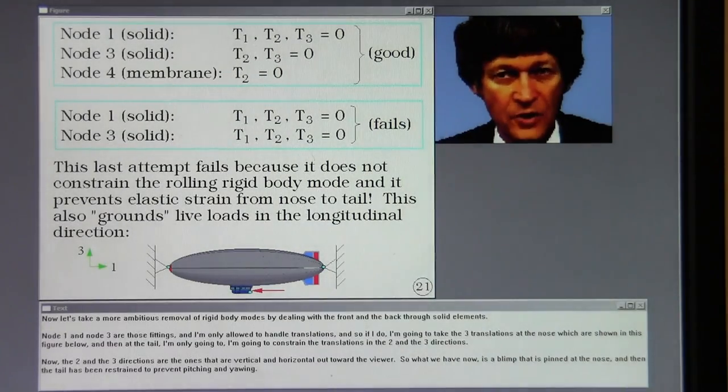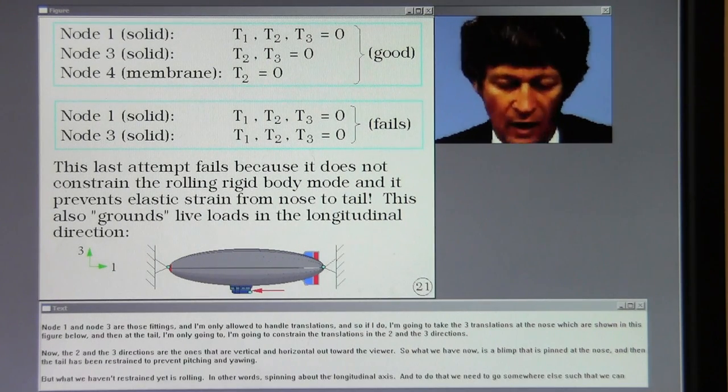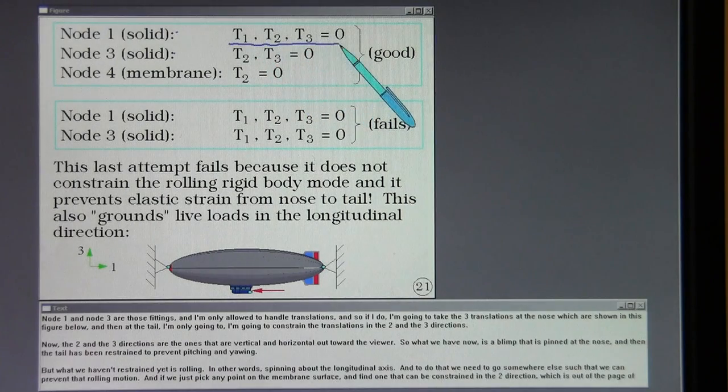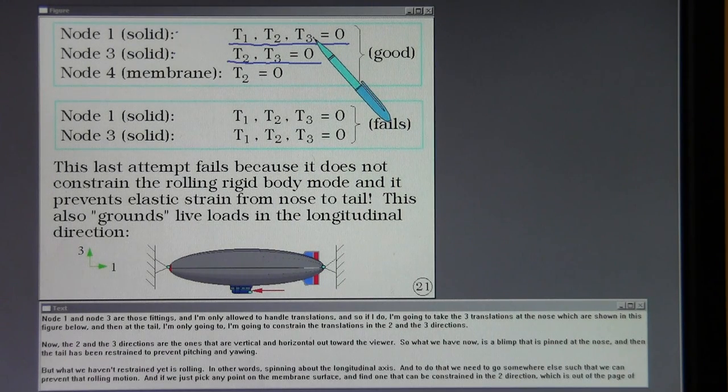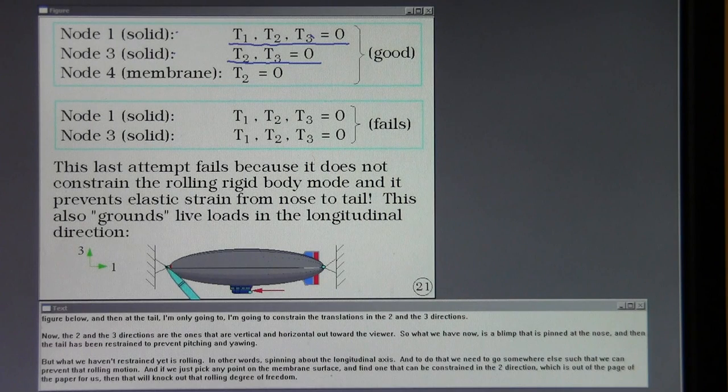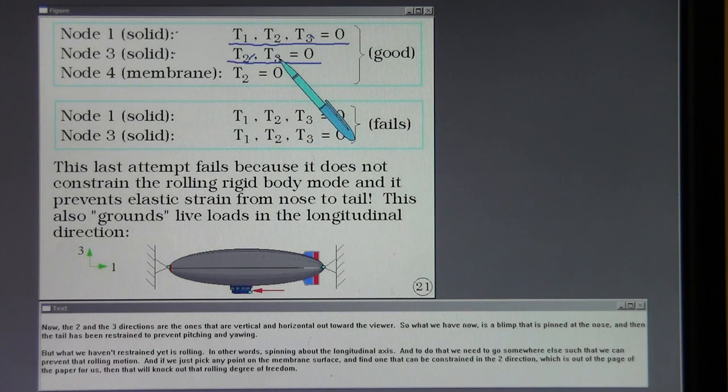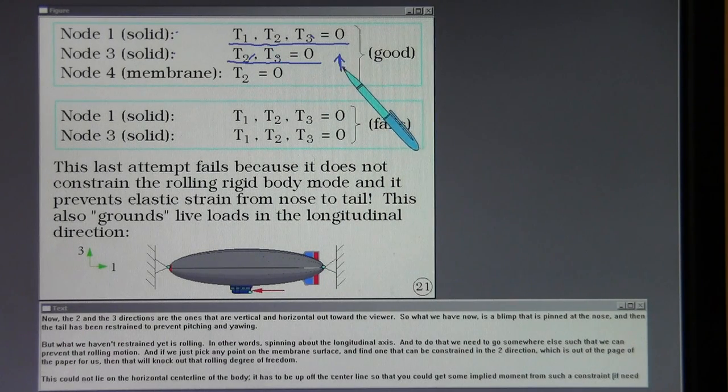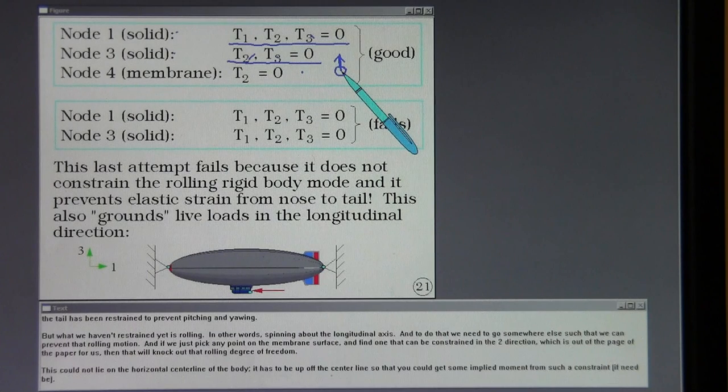Now let's take a more ambitious removal of rigid body modes by dealing with the front and the back through solid elements. Node one and node three are those fittings and I'm only allowed to handle translations. And so if I do I'm going to take the three translations at the nose which are shown in this figure below. And then at the tail I'm only going to constrain the translations in the two and the three directions. Now the two and the three directions are the ones that are vertical and horizontal out toward the viewer. So what we have now is a blimp that is pinned at the nose and then the tail has been restrained to prevent pitching and yawing.